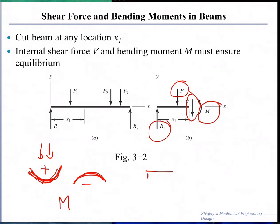So the right section goes down, then we take it as positive. Otherwise, we will take it as negative.